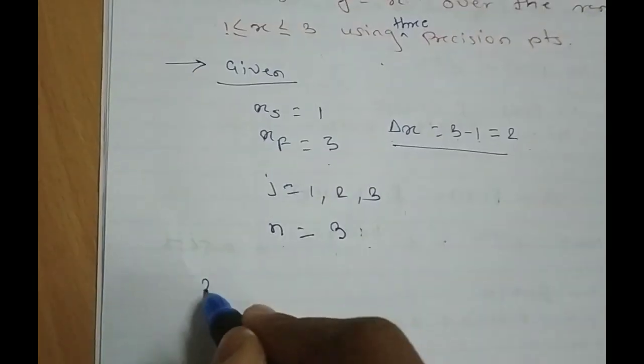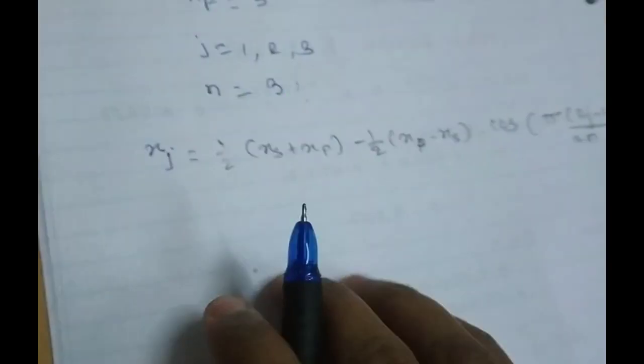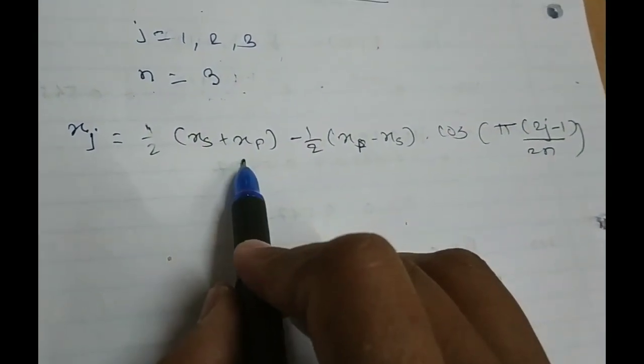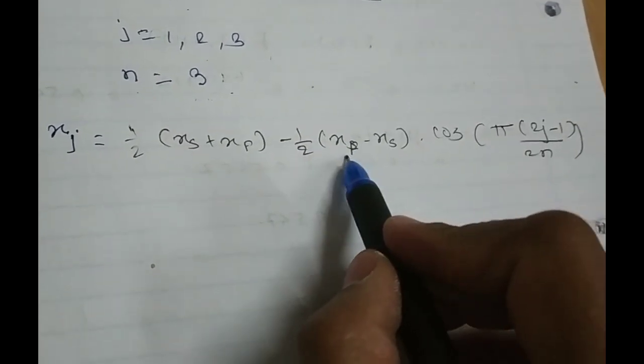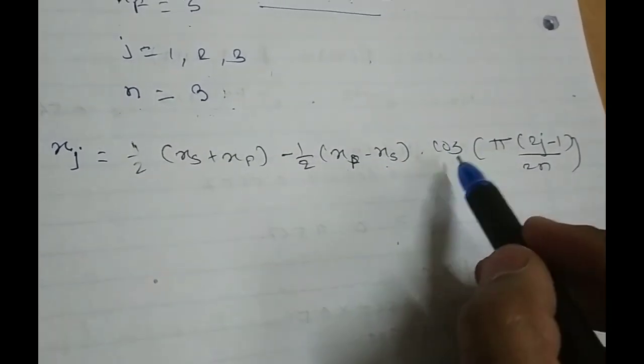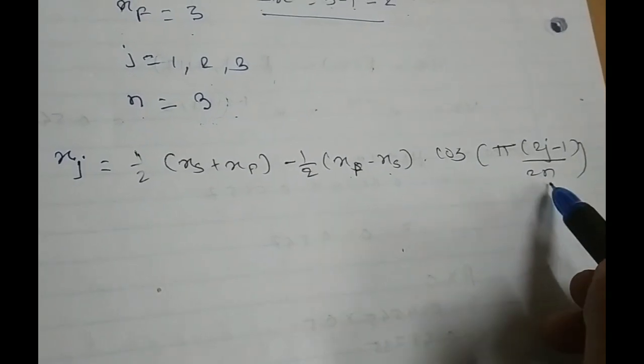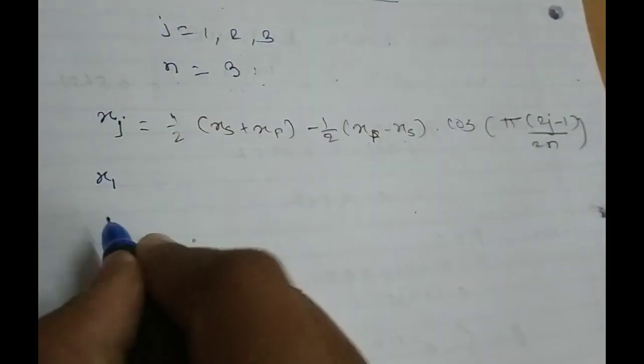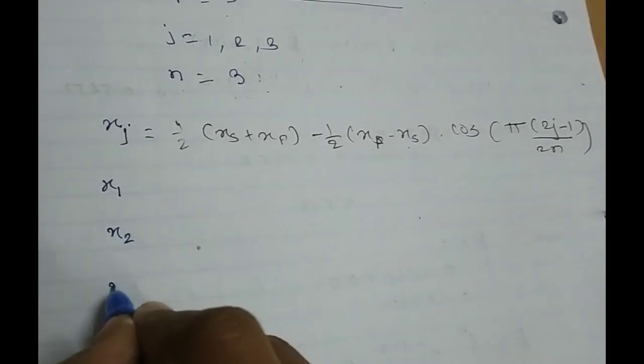So, just let me write the formula. We have formula xj equals 1/2(xs plus xf) minus 1/2(xf minus xs) into cos of (pi(2j minus 1) divided by 2n). So, let's just put the value. So, firstly let's just write for x1 then x2 and then x3.